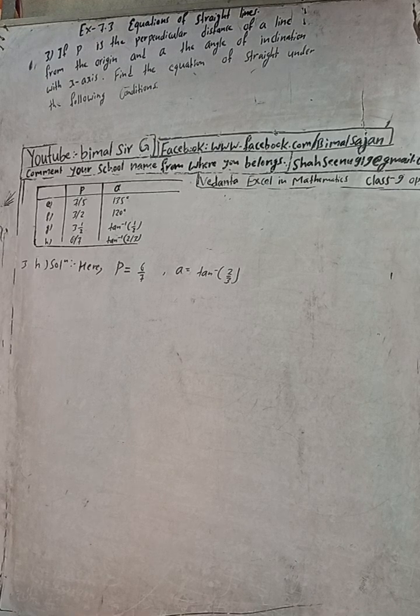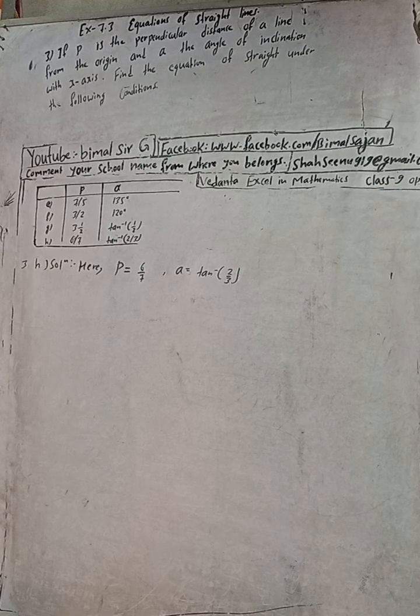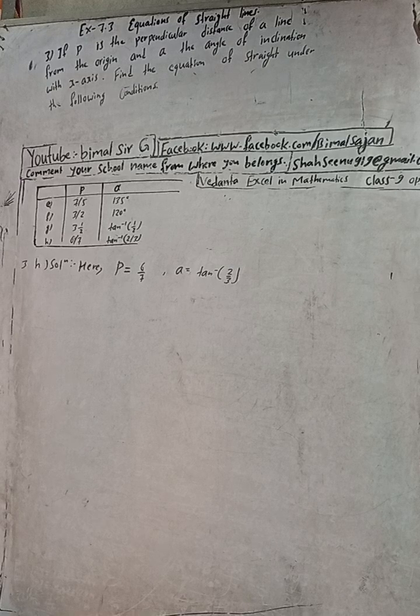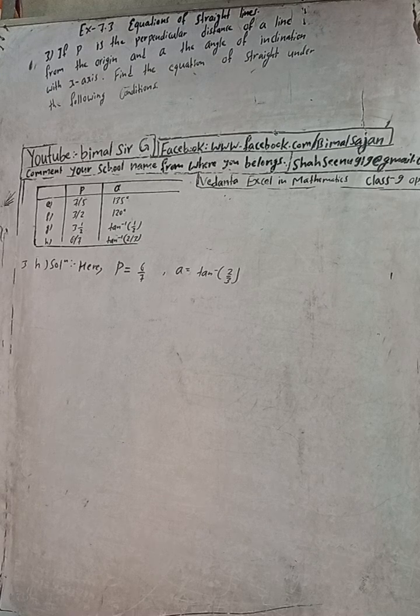In this three years problem, perpendicular distance is given as 6/7, and alpha is given as tan inverse 2/3. So tan inverse, normally tan inverse, this is tan inverse 2/3. Let me tell you about the inverse a lot.